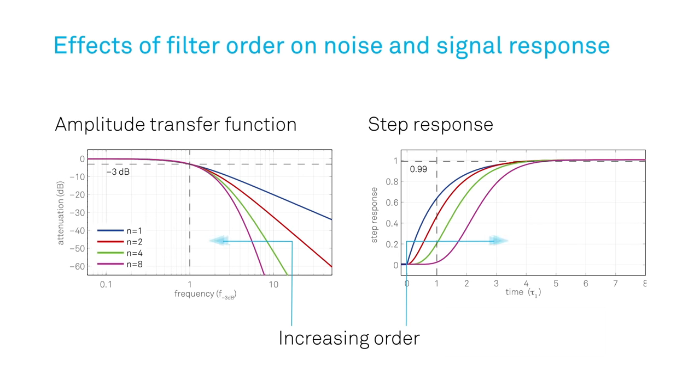The shape of the filter can also be adjusted by choosing its order. A higher order leads to more ideal, rectangular filter transfer function that blocks frequencies outside the filter bandwidth more efficiently, but takes more time to settle, causing a phase delay.